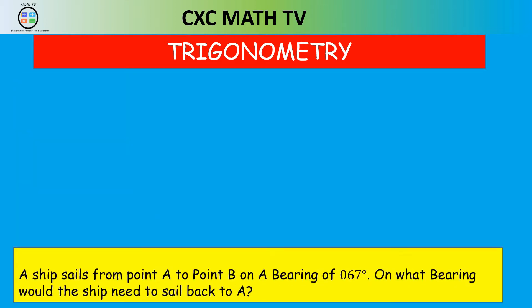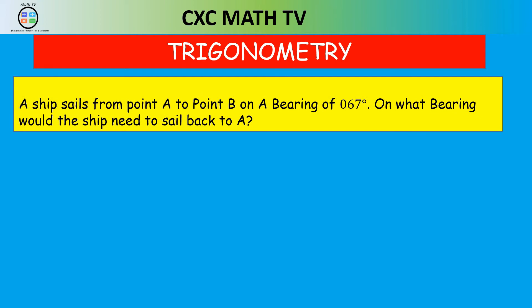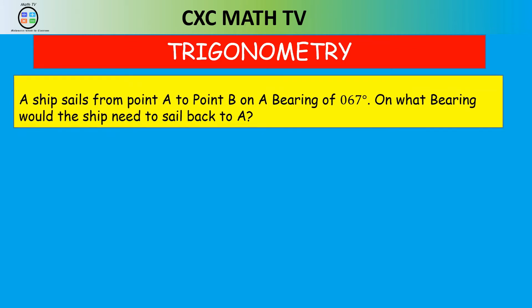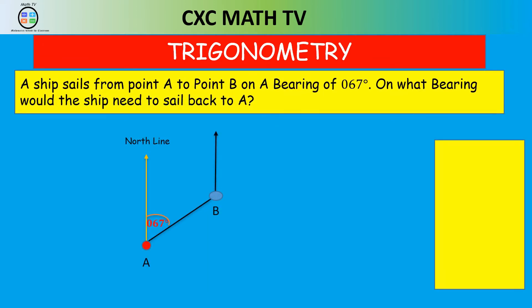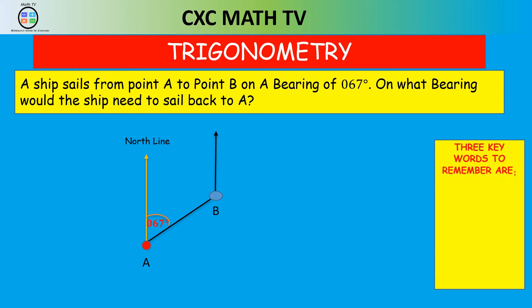So what if they asked us this question: a ship sails from point A to point B on a bearing of 67 degrees — on what bearing would the ship need to sail back to A? Remember we already had the diagram of going from point A to point B. Now if we need to sail back to A, we are asked to find the bearing of A from B. So now the new 'from' position is B.